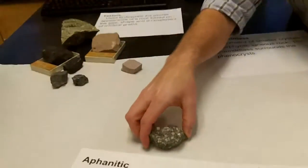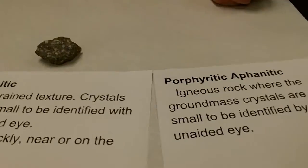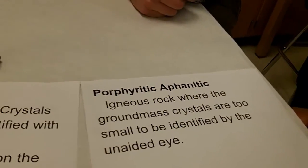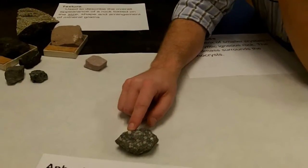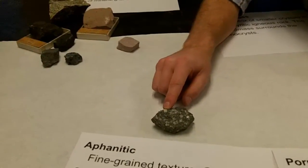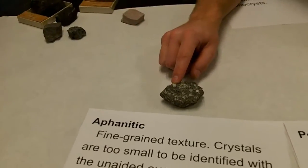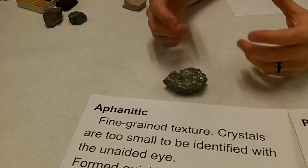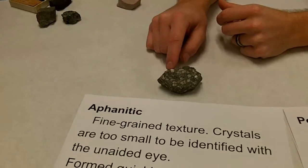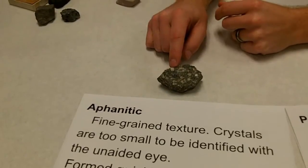Let's do one more for practice. What do we got? Porphyritic aphanitic! The white ones are the phenocrysts. Did those cool deep underground or towards the surface? Underground, because they're bigger. With bigger crystals, it's deeper underground — intrusive. The ground mass — that green — you can't see any crystals. So did it cool towards the surface or deep underground? Towards the surface. Nice, you guys got it!